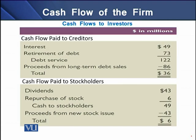The third type is cash flows to investors, or fund providers. There are two types of fund providers: external, generally known as creditors, and internal, known as stockholders. Cash flow paid to creditors is $36 million, which is the net of interest payment and retirement of debt — debt service of $122 million — while $86 million was raised through the sale of debt, resulting in a net cash outflow of $36 million to creditors.